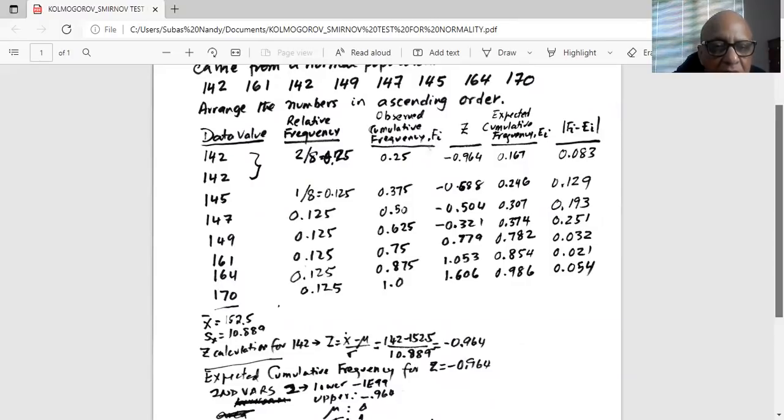We repeat the process for the other numbers. So for the next one it will be 145 minus 152.5, which is the mean, divided by standard deviation 10.889, which will give minus 0.688. So this is the z score corresponding to 145 and we repeat the process for the other numbers.